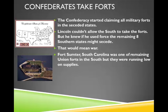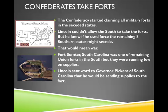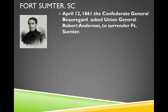Lincoln sent word to Governor Pickens of South Carolina telling him that he would be sending a shipload of supplies to the fort, hoping Pickens would let the supplies reach the fort. Unfortunately, the supplies never made it. On April 12, 1861, Confederate General Beauregard asked Union General Anderson to surrender Fort Sumter. It was very difficult for him because Anderson had been his instructor at West Point and had given him the recommendation to remain there, so he had great respect for Anderson and really didn't want to go to war with him. Respectfully, Anderson refused to surrender the fort.